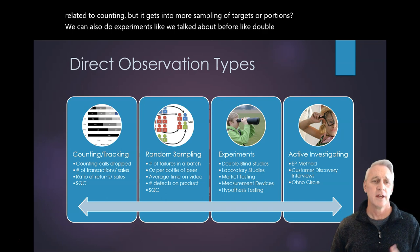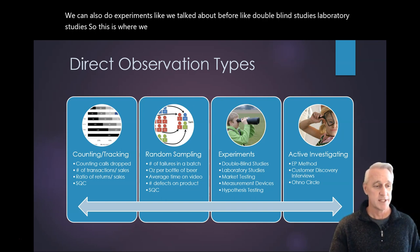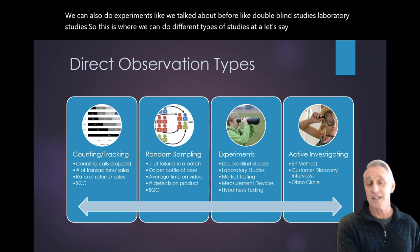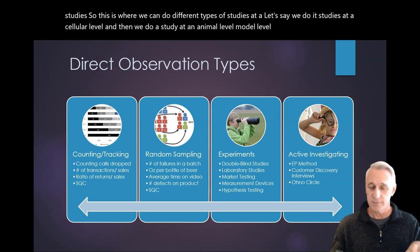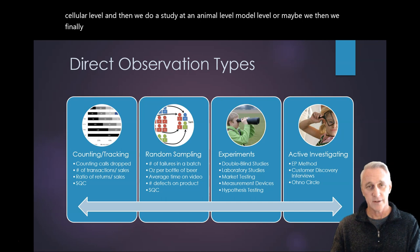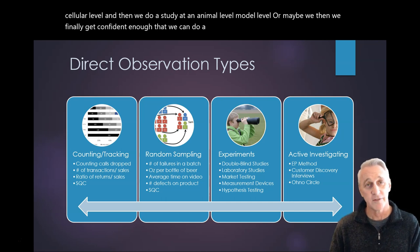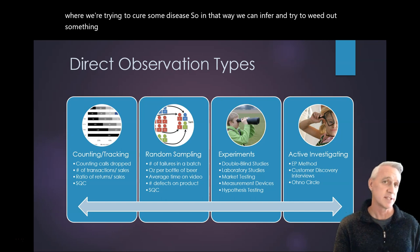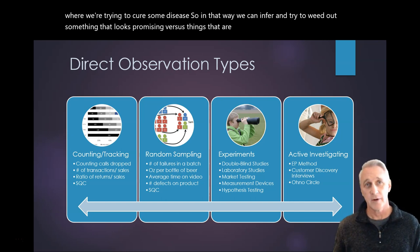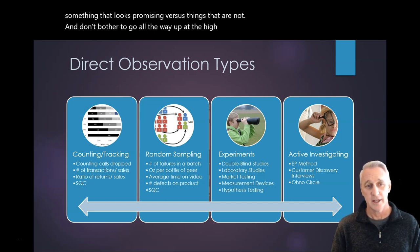We can also do experiments, like we talked about before, like double-blind studies, laboratory studies. So this is where we can do different types of studies at a, let's say we do studies at a cellular level, and then we do a study at an animal level, model level, or then we finally get confident enough that we can do a study at the human level for maybe a medicine where we're trying to cure some disease. So in that way, we can infer and try to weed out something that looks promising versus things that are not, and don't bother to go all the way up at the high risk later on.